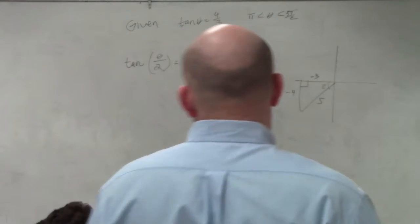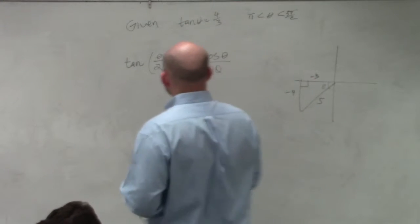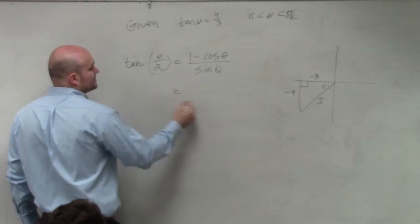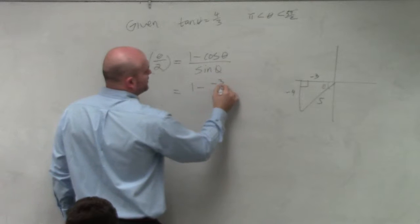Let's just go ahead and practice this one here. So again, we're just going to do 1 minus cosine, which is negative 3 over 5.